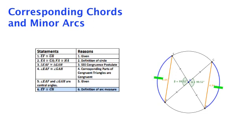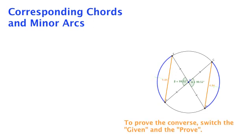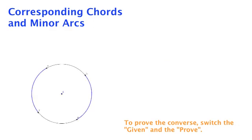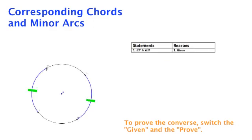Can we also prove the converse is true? Let's see. So if we know that these minor arcs are congruent, can we prove that the corresponding chords are also congruent?